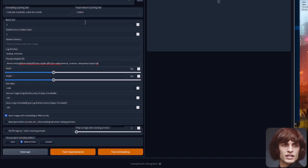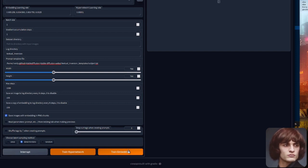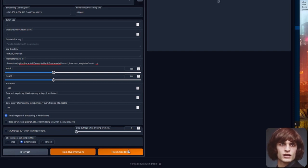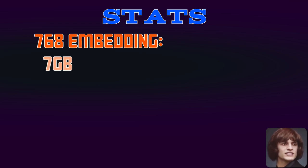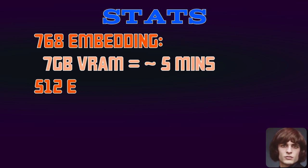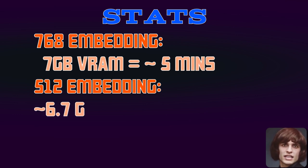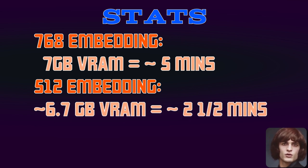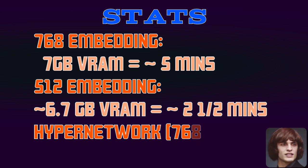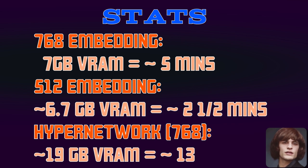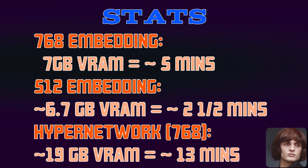I selected the train embedding option and let that run for 1000 steps. When training for the 512 model, I changed the size down to 512x512 to match the native resolutions for the various models. For the Stable Diffusion 2 768 embedding, my maximum VRAM usage was around 7GB, so if you've got an 8GB VRAM card you should be able to do all this textual inversion, even at higher resolutions. Performance was about 3.5 iterations per second, so the full 1000 steps at 768 resolution took about five minutes.